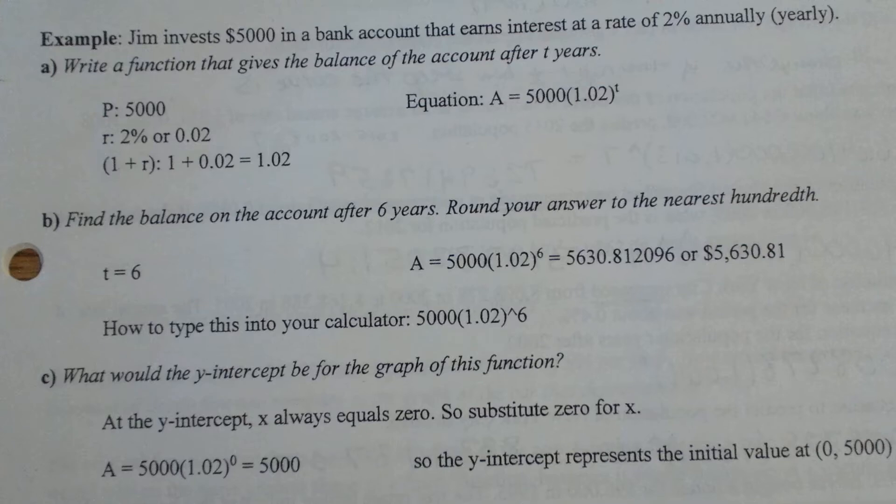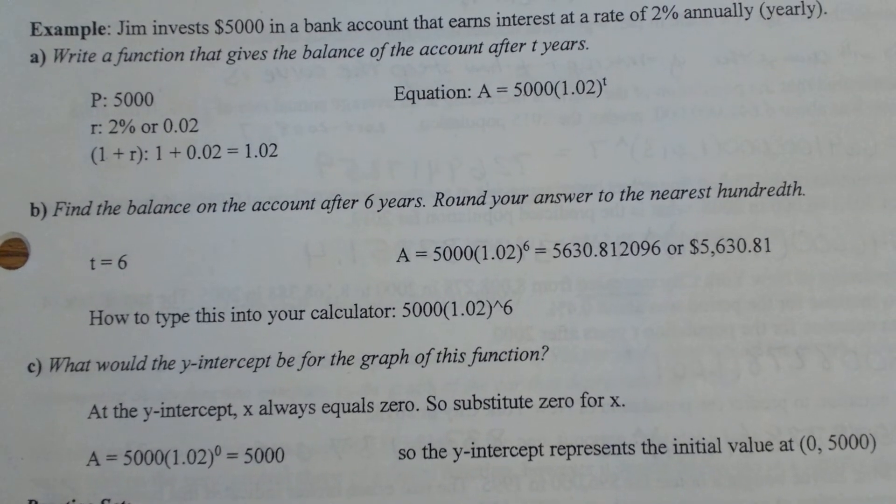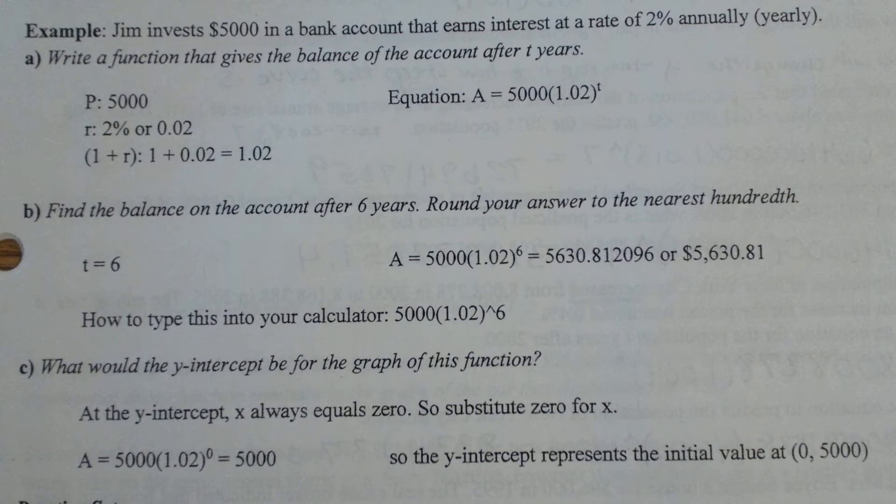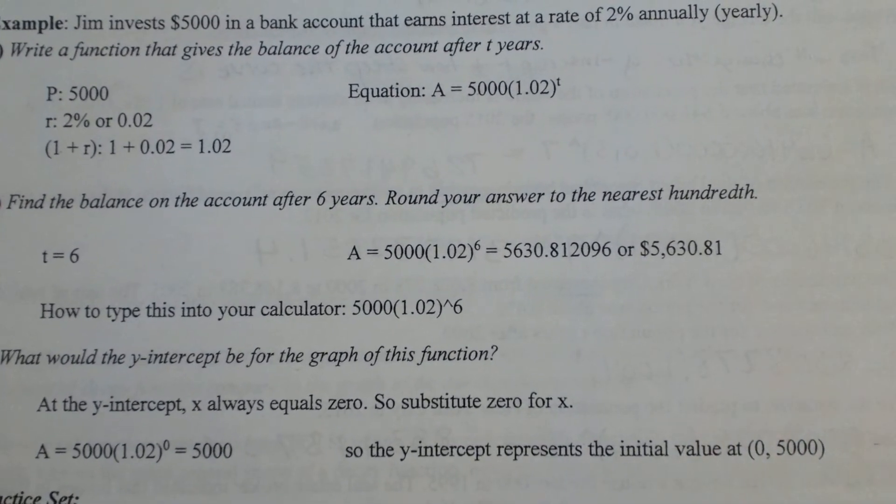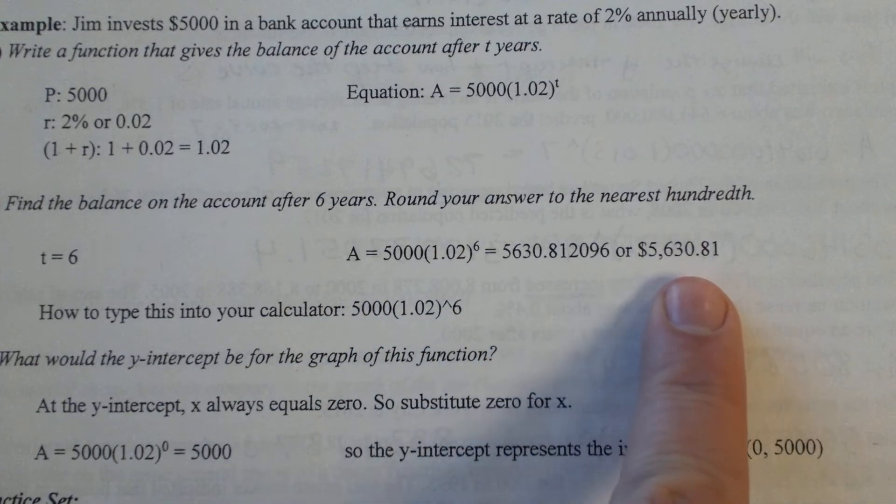So the follow-up question for that is find the balance in his account after six years. Usually the money will be round to two decimal places to be accurate. So all you have to do is plug in that exponent for this case and figure out the outcome there and round it to two decimal places.